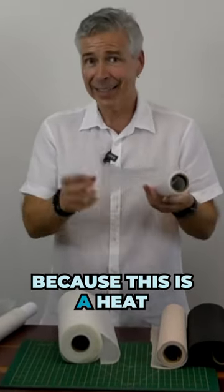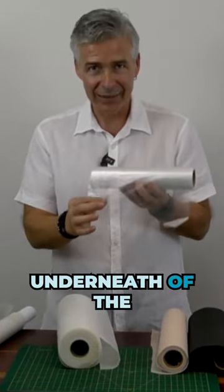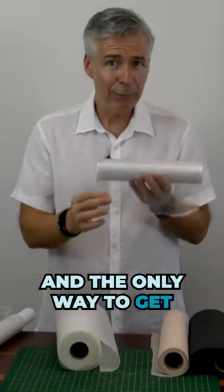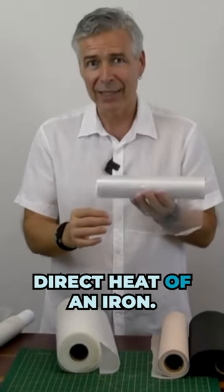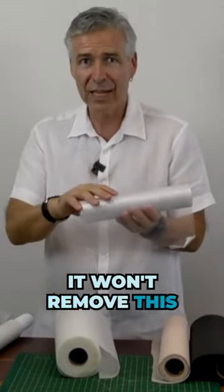Because this is a heat-and-gone stabilizer, not a water-soluble stabilizer, all of this will remain underneath the stitches. The only way to get rid of it is with the direct heat of an iron. Even in the dryer on the hottest cycle, it won't remove the stabilizer.